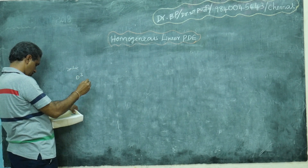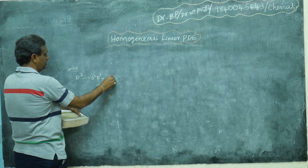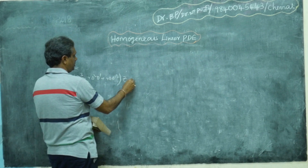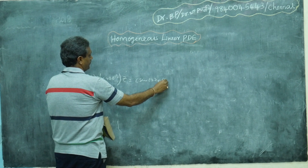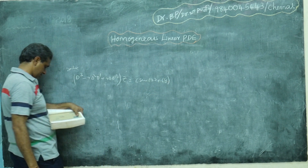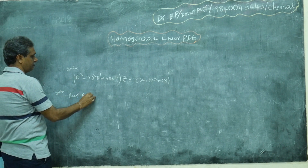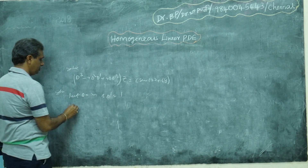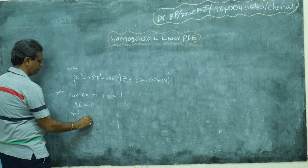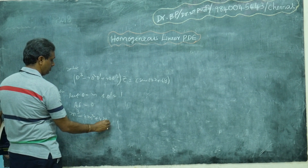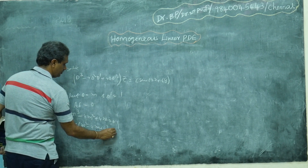The problem is: (D³ - 4D²D' + 4DD'²) z = 6 sin(3x + 6y). For the solution, put D = m and D' = 1 to get the auxiliary equation equal to zero. The auxiliary equation becomes m³ - 4m² + 4m = 0, and this problem is already done, so skipping to m² - 4m + 4 = 0.